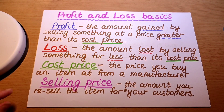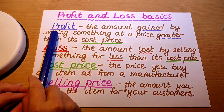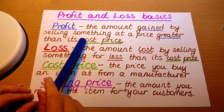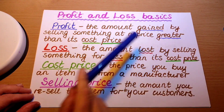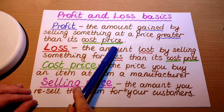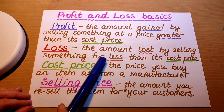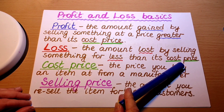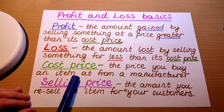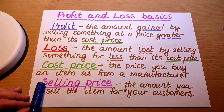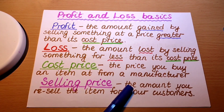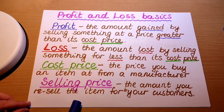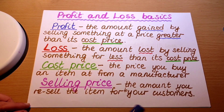A loss of 15 pounds — 60 take away 45 is 15 pounds loss. Let's look at some basic terminology first. Profit is the amount gained by selling something at a price greater than its cost price. Loss is the amount lost by selling something for less than its cost price. Cost price is the price you buy an item at from a manufacturer. Selling price is the amount you resell the item for to your customers.